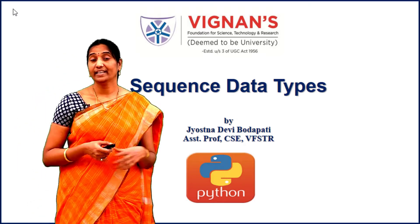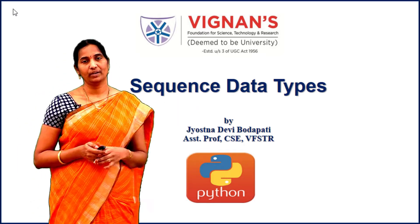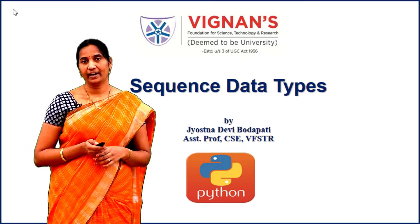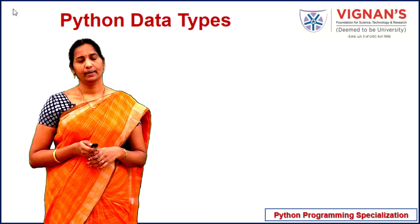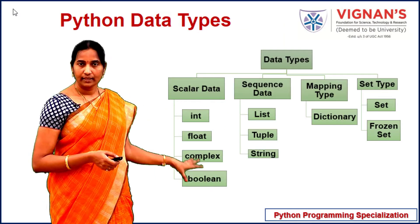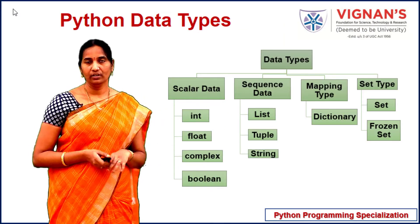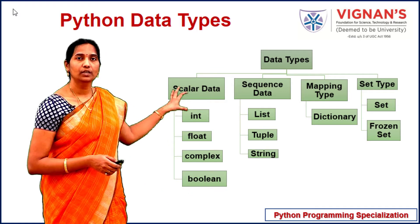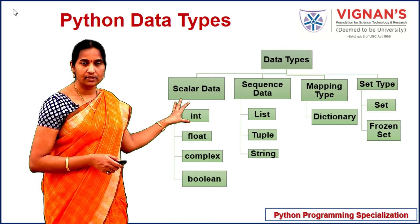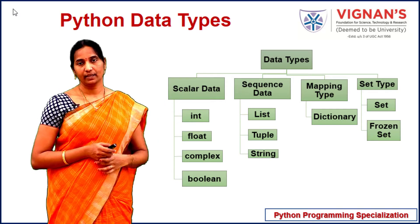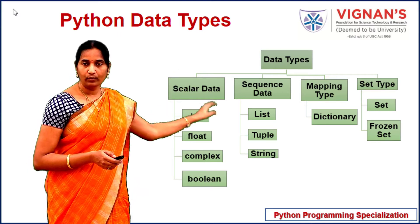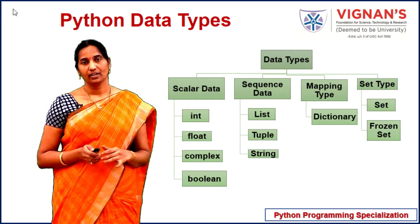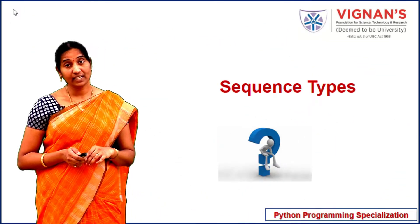In the earlier lectures we have seen various numerical data types supported by Python. In this lecture we'll see what sequence data types are and what are the various sequence data types that Python supports. We have already seen the details of the scalar data types, especially the numeric data types like integer, float, and complex. Now we'll see the sequence data types: list, tuple, and string.